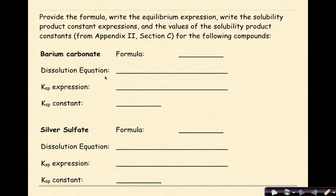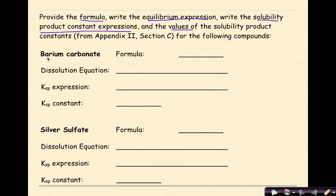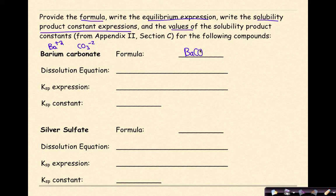Let's do an example together, then some practice on your own. Provide the formula, write the equilibrium expression, write the solubility product constant expression, and find the KSP value from Appendix 2 for the following compounds. The first one is barium carbonate. Barium is Ba with a common charge of +2, and carbonate is CO3²⁻, so the formula is BaCO3.